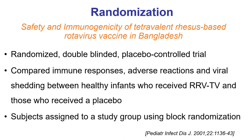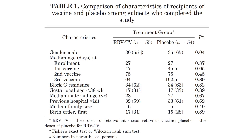Here's an example: a study on the safety and immunogenicity of a tetravalent rotavirus-based vaccine in Bangladesh — a vaccine later withdrawn for causing intussusception after it was introduced in other parts of the world. Looking at the baseline characteristics table, we compare the intervention group and control group, and we can see the good effect of randomization — similar distribution of characteristics between the two groups.